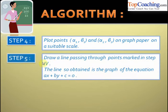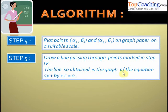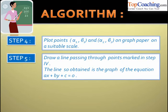In the fifth step, draw a line passing through the two points marked in step four. When we join these two points, the line so obtained is the graph of the equation ax plus by plus c equal to zero.